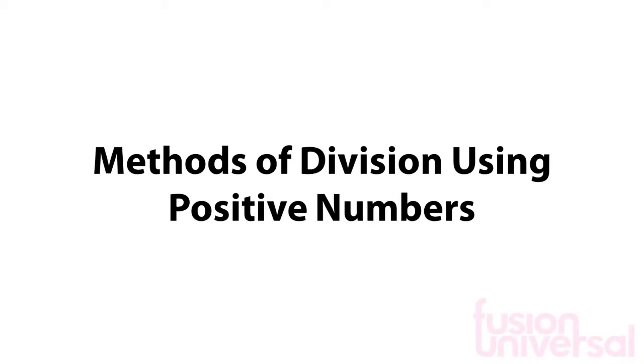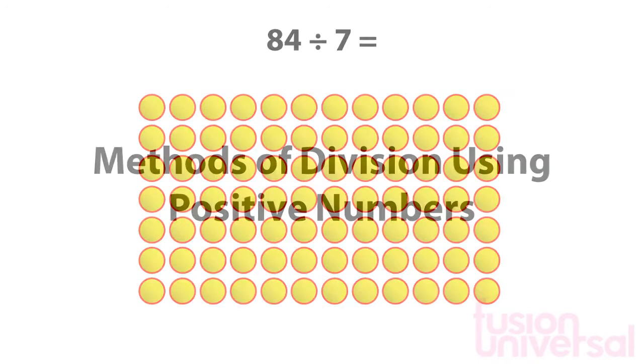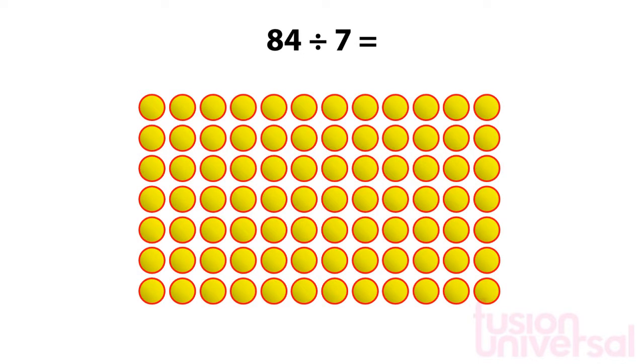You should already understand the concept of division. So now we are going to look at some methods you can use to work out division using positive numbers. To start with, we are going to look at 84 divided by 7.